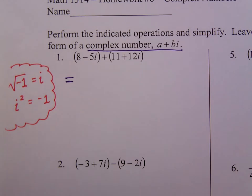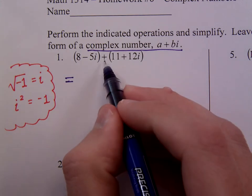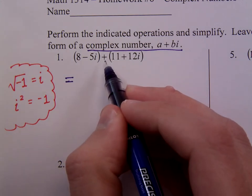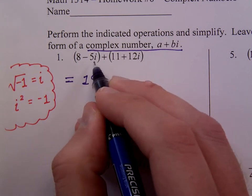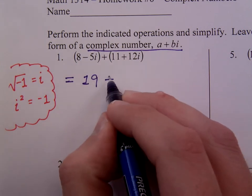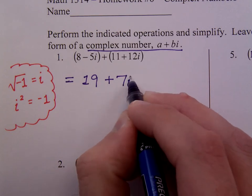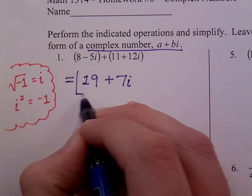Please make sure you read the problem very carefully. This has addition between these, so that means you just combine like terms. 8 plus 11 is 19. Negative 5i plus 12i is positive 7i. And that's all there is to it.